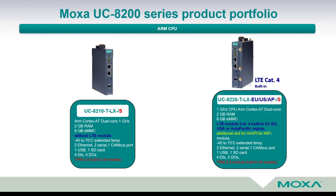The second model is the UC82220, which comes with a built-in LTE module for cellular communication at category 4. Depending on the region — EU for Europe, US for United States, AP for Asia Pacific — the device is intended to be deployed in different parts of the world.